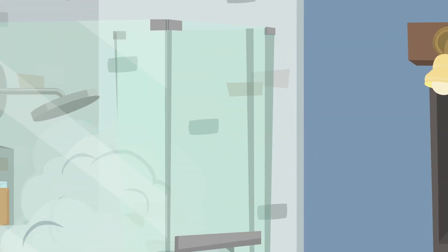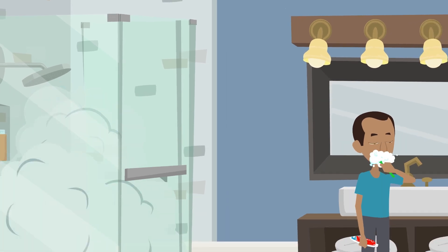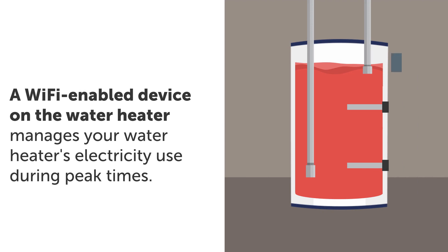Connect2Save optimizes the water heating process during non-peak times without any inconvenience to your household. A Wi-Fi enabled device installed on your water heater communicates with your cooperative. Connect2Save optimizes your water heater's energy use and helps your cooperative manage peak demand and rates.